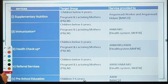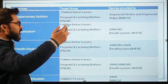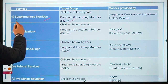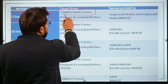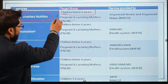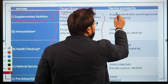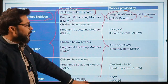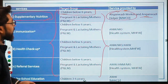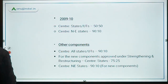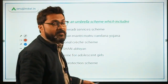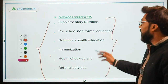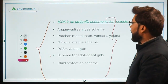There is a table that lists key components, target groups, and service providers. For supplementary nutrition, the target group is children below six years and pregnant women and lactating mothers. Services are provided by the Anganwadi worker and Anganwadi helper. You should remember the schemes included under the umbrella scheme of ICDS and the services provided under ICDS.